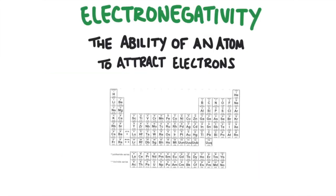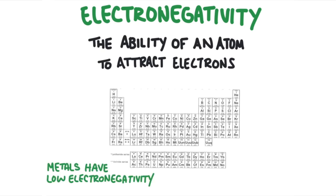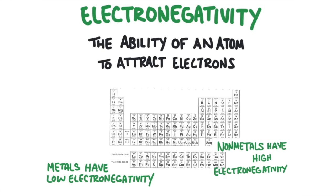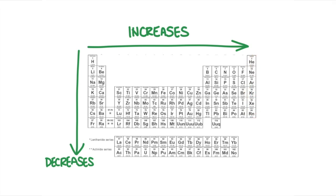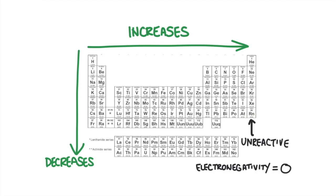Electronegativity is kind of the opposite of ionization energy. It is the ability of an atom to attract electrons to itself. In general, metals have low electronegativity and nonmetals have high electronegativity. A high electronegativity means the atom has a strong ability to attract electrons to itself. Moving from left to right across the periodic table, electronegativity increases. Moving down a column, electronegativity decreases. According to this trend, noble gases should have the highest electronegativity, but remember that noble gases have 8 valence electrons and don't want to gain or lose electrons — so the electronegativity of noble gases is effectively zero. That means fluorine has the highest electronegativity, because it is the furthest to the right and furthest to the top.